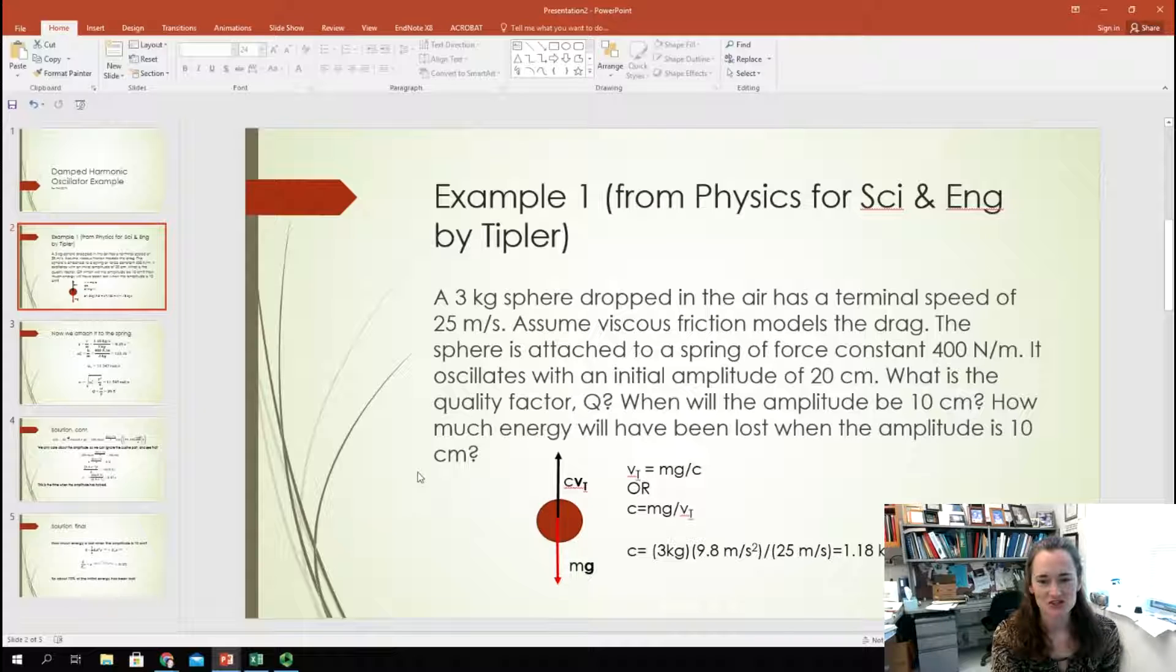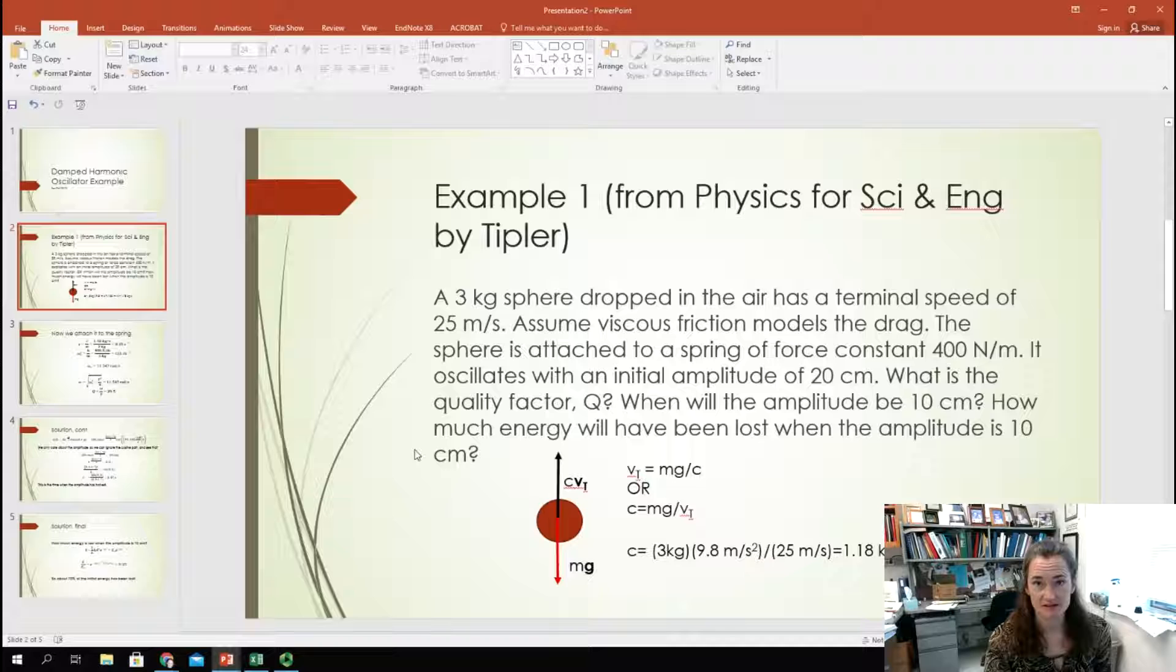Okay. So, first of all, this problem is kind of broken into two parts, isn't it? It tells you first that you're dropping a sphere and it's modeled by viscous friction and it has a terminal speed of 25 meters per second.